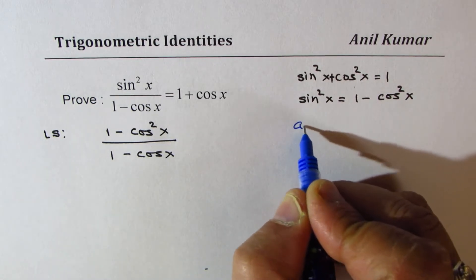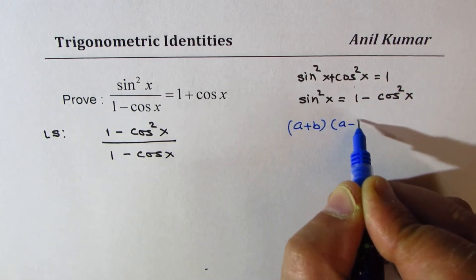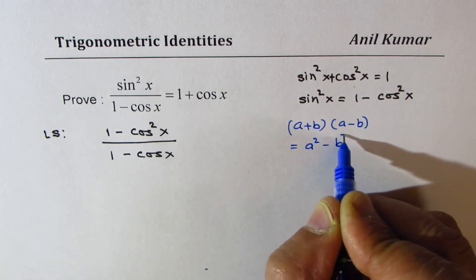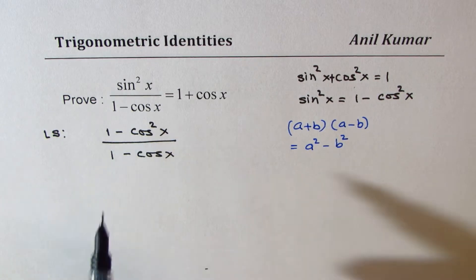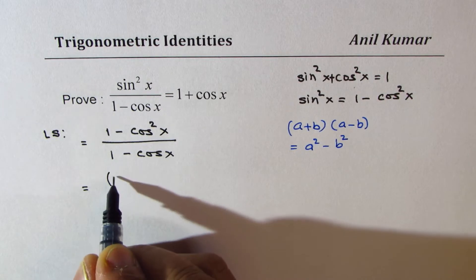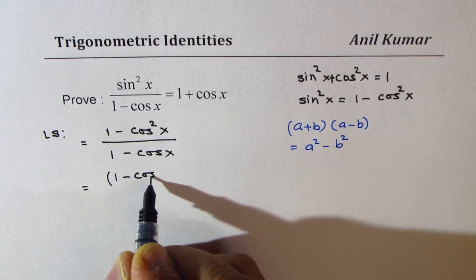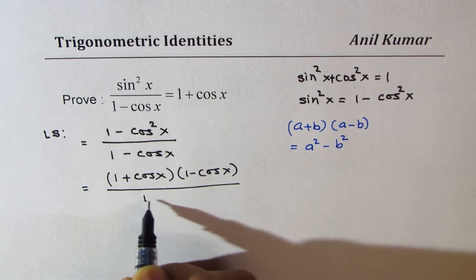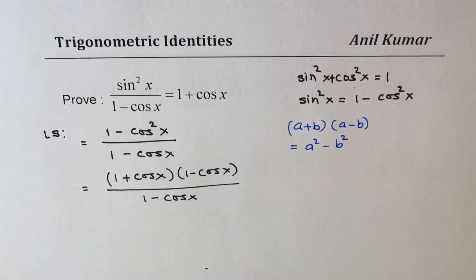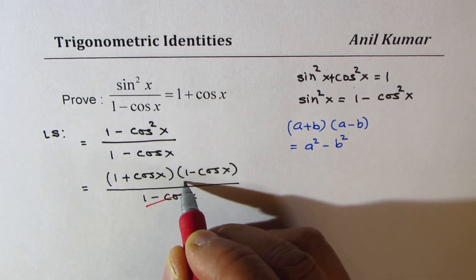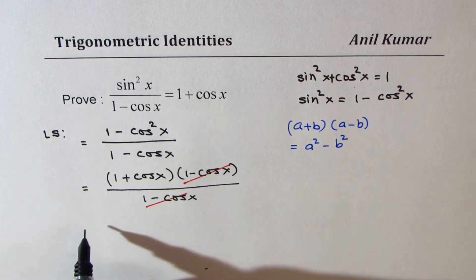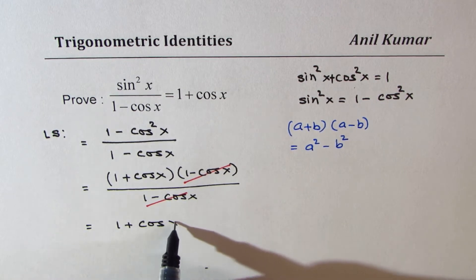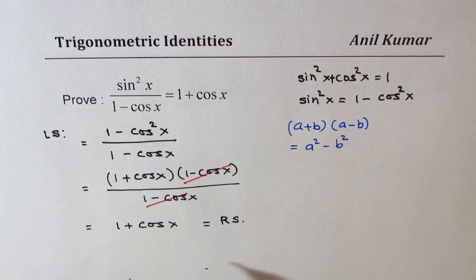We know a plus b times a minus b is equal to a square minus b square. So this is 1 square minus cos square, so I could write the left side as 1 plus cos x times 1 minus cos x, divided by 1 minus cos x. Now as you can see, we have a common factor in numerator and denominator which can be cancelled, so 1 minus cos x cancels and we are left with 1 plus cos x. This is exactly equal to the right side, and so we have proven that left side equals right side.